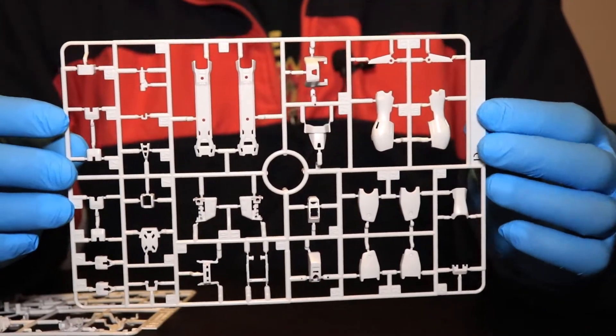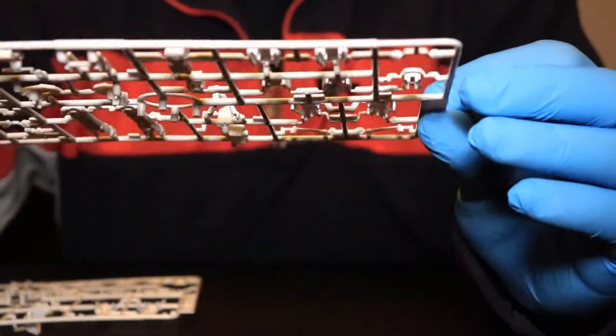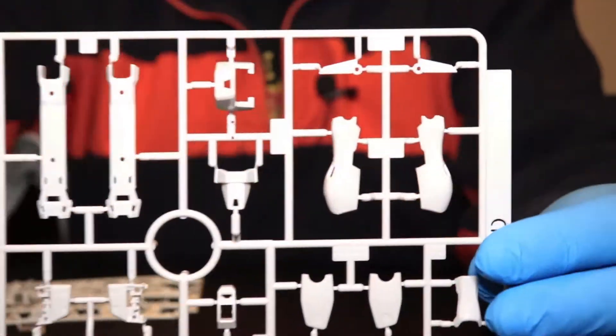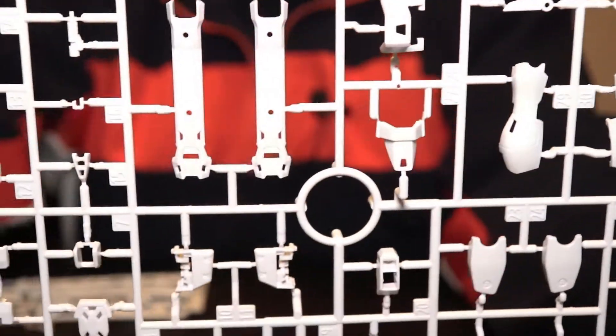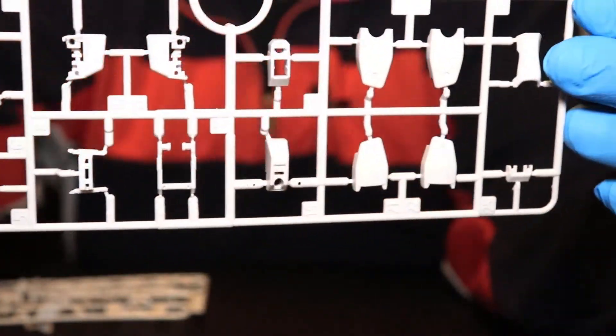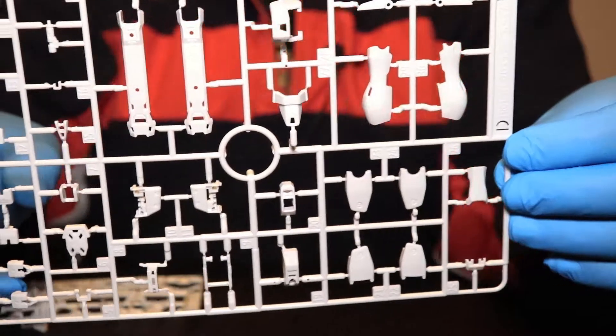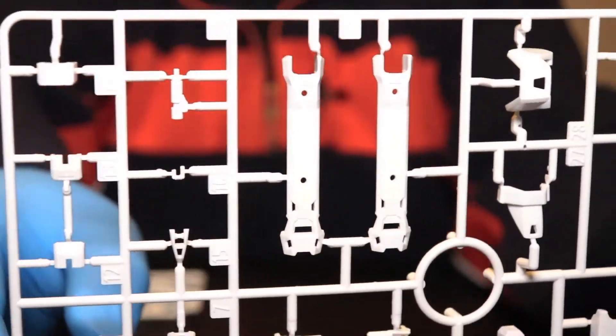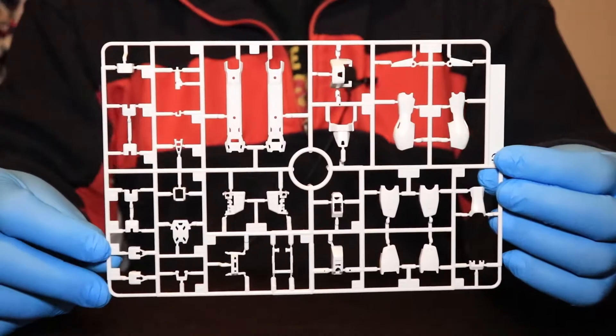We have two D plates right here. And check out that detail right there. Nice. One thing I love about the Real Grades is very good detail in part separation. There's two of them.